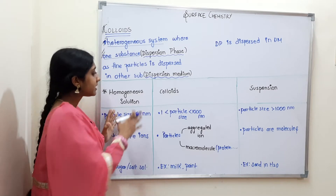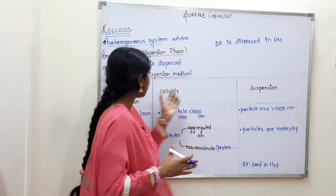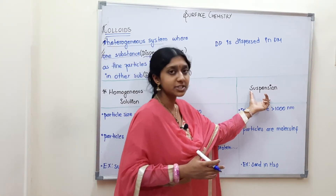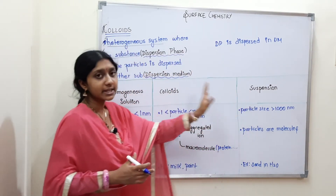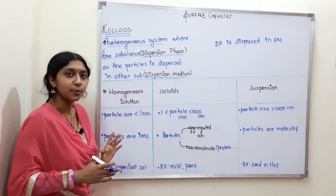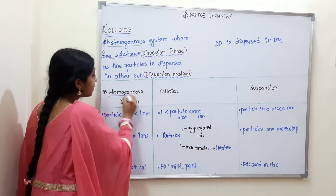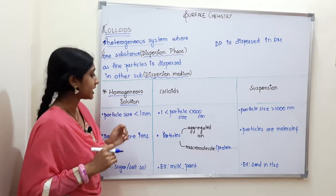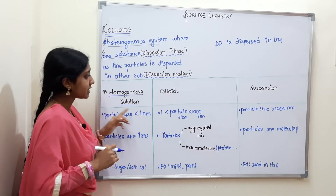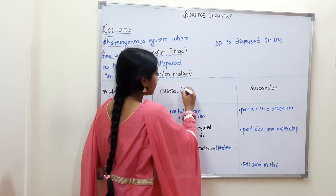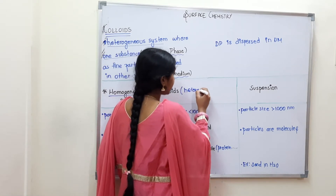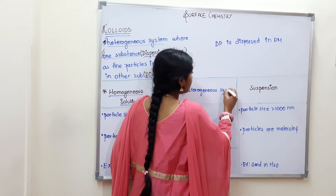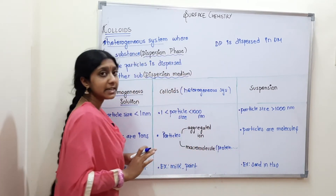There are three types of systems. One is homogeneous solution, next is colloids, and next is suspension — three different systems. Homogeneous means uniform composition. Colloids is a heterogeneous system, and then there is suspension.